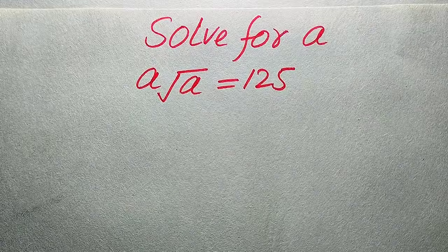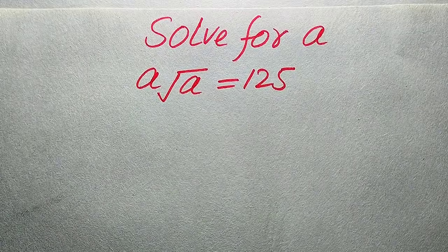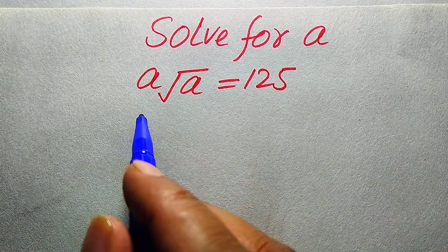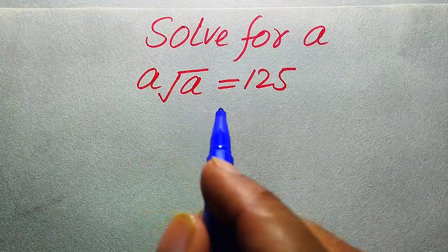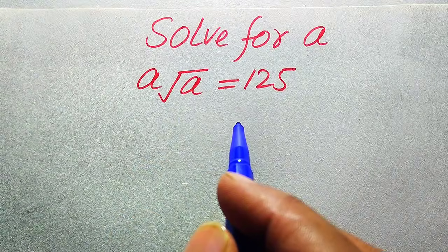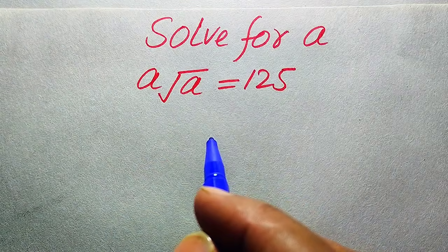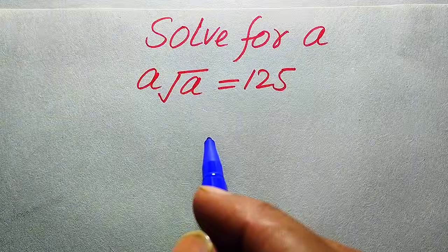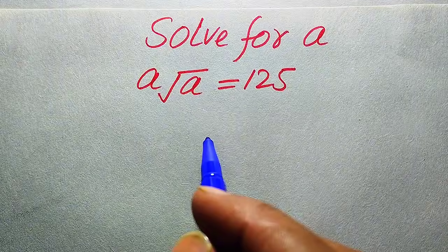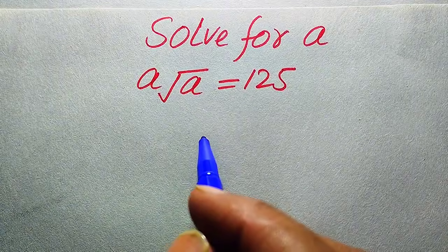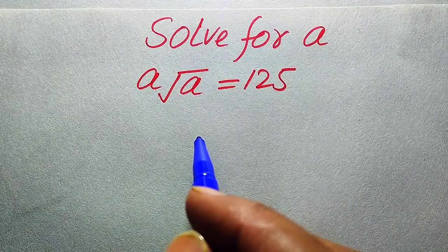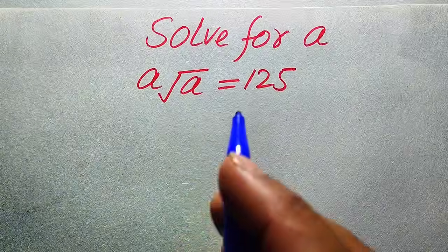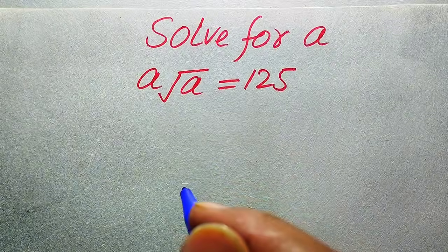Hello everyone, welcome. We'll solve this algebra problem where a times square root of a equals 125, and we solve this problem for all the values of a. We need to find all the roots of this equation, so now we move towards the solution.